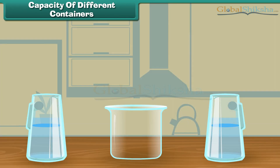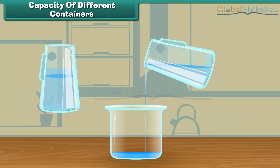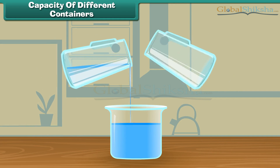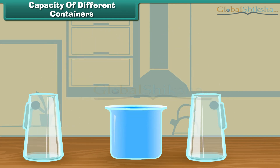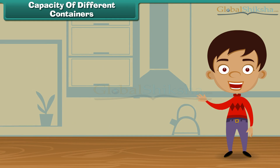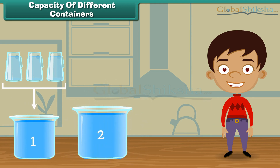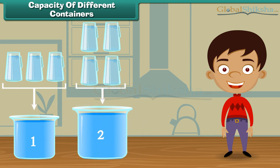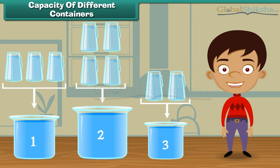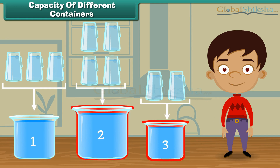Now let us fill the third vessel. One and two. Two jugs of water fill the third vessel. Friends, we have seen that vessel one is filled with three jugs of water, vessel two is filled with four jugs of water, and vessel three is filled with two jugs of water. It means vessel three holds the least water, and vessel two holds most of the water.